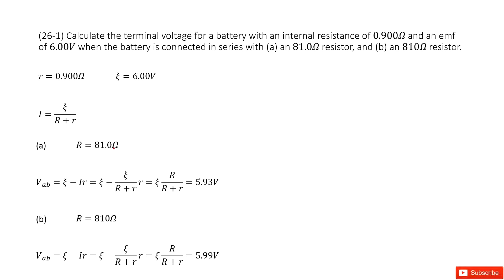As we consider the equations in our textbook, the terminal voltage can be written as emf minus the current times internal resistance. In this equation, emf is given and the internal resistance is given, so we need to find the current initially.